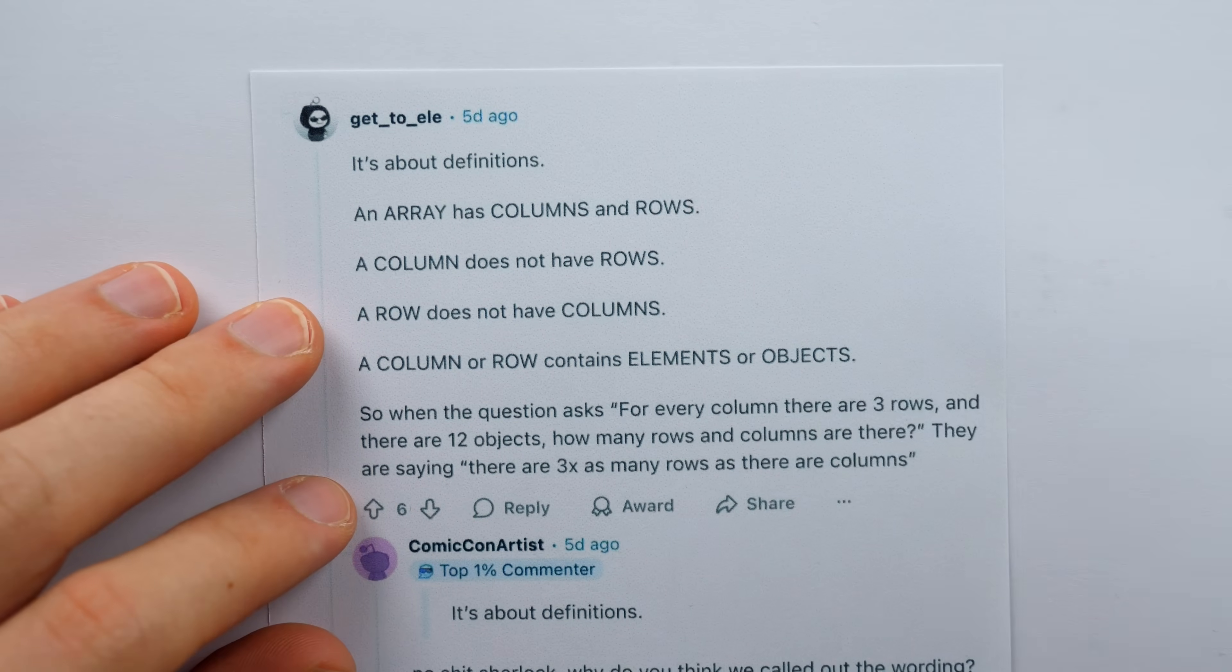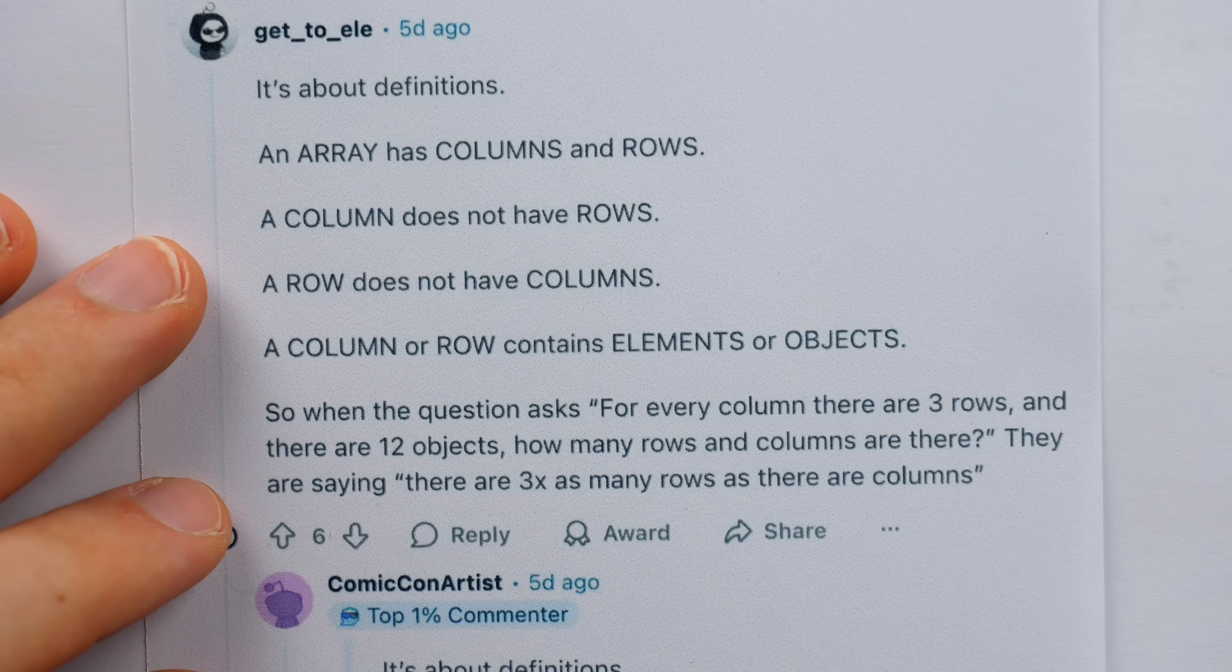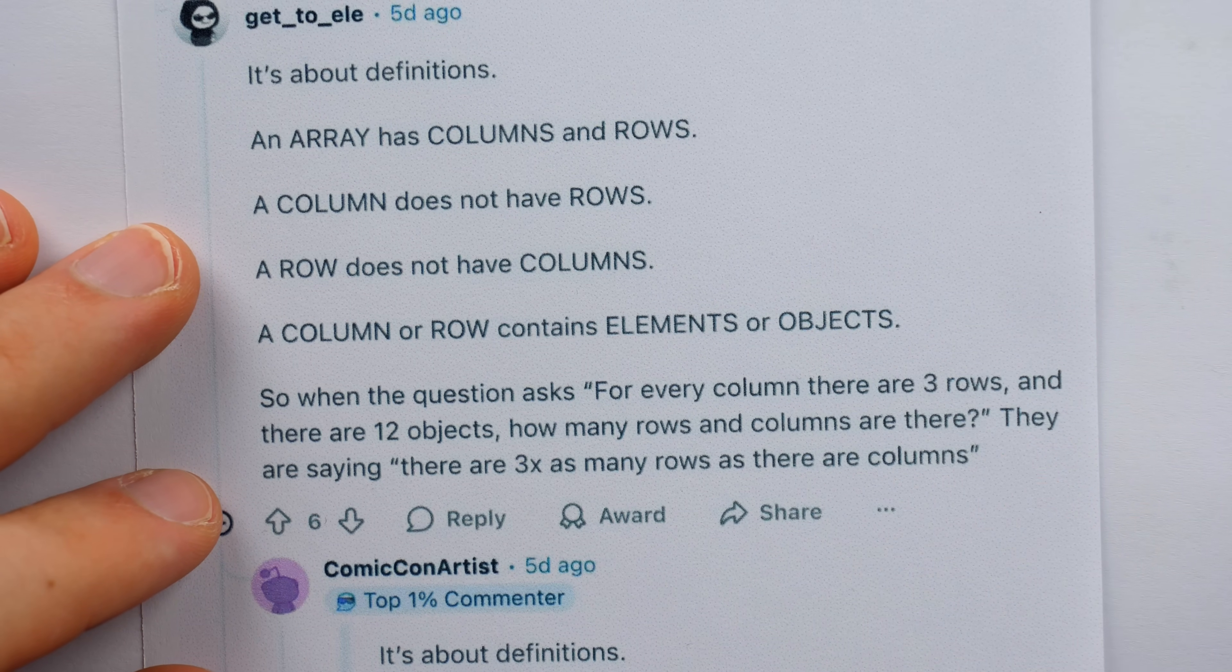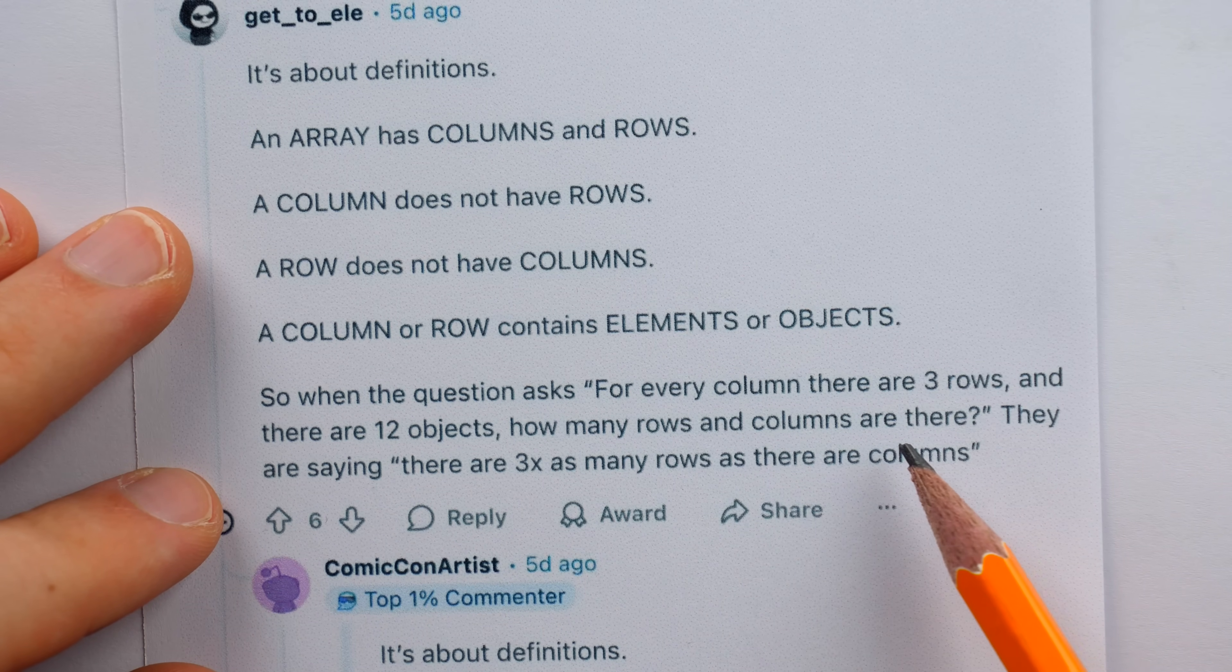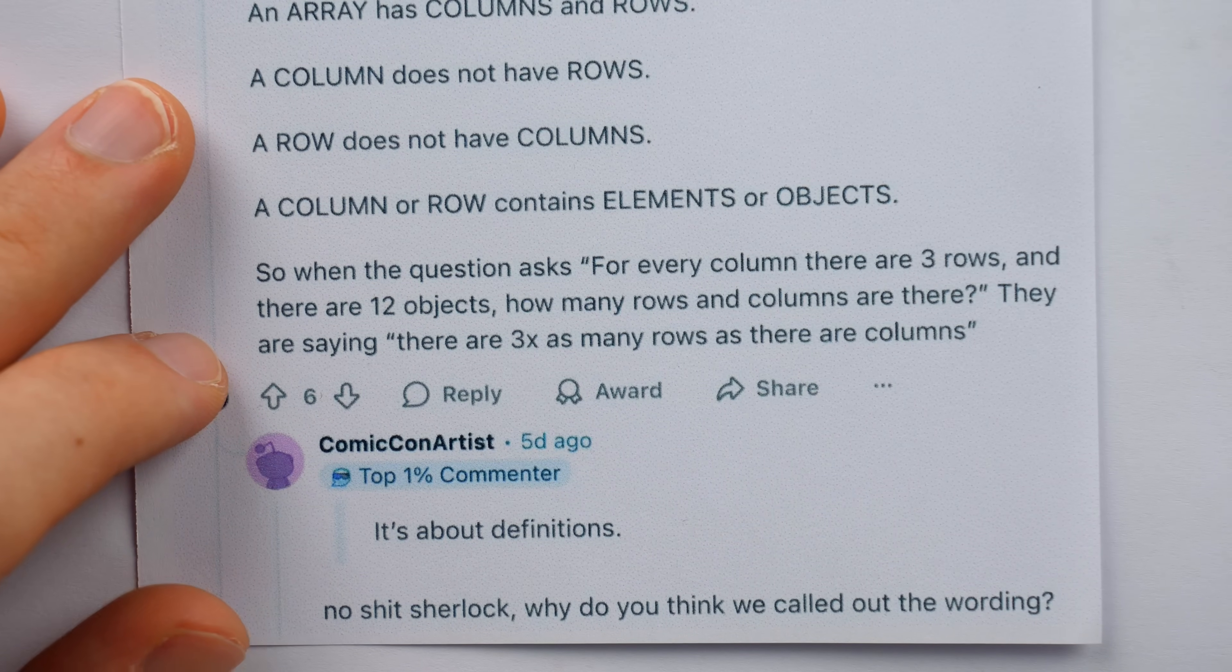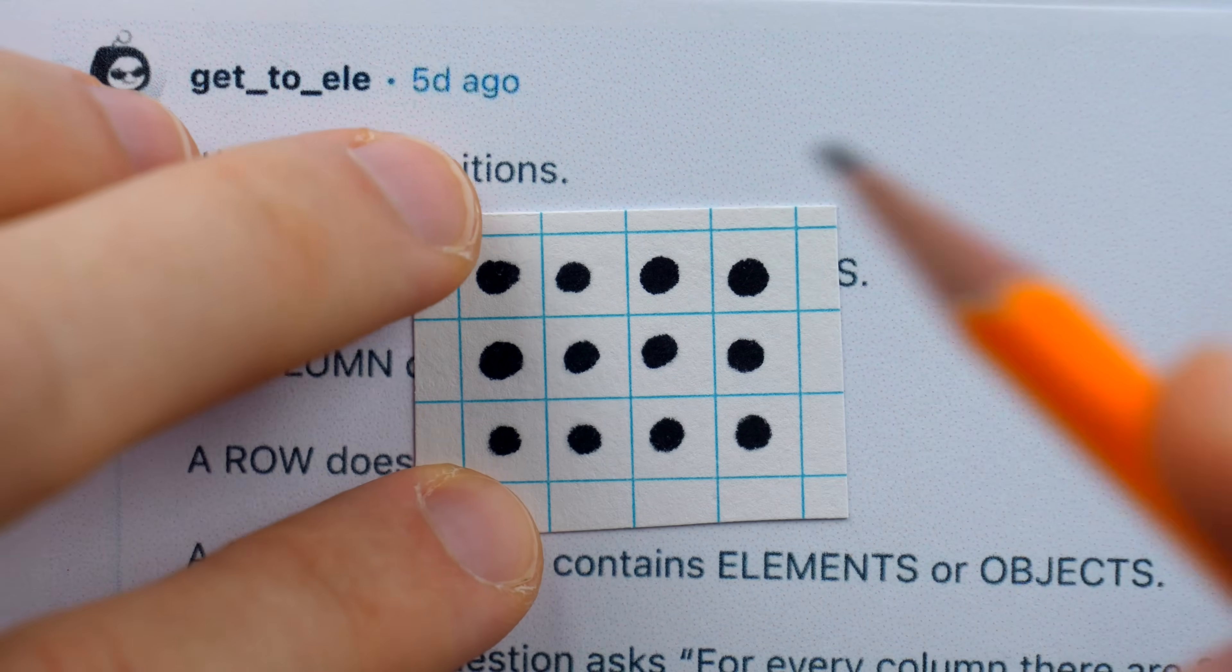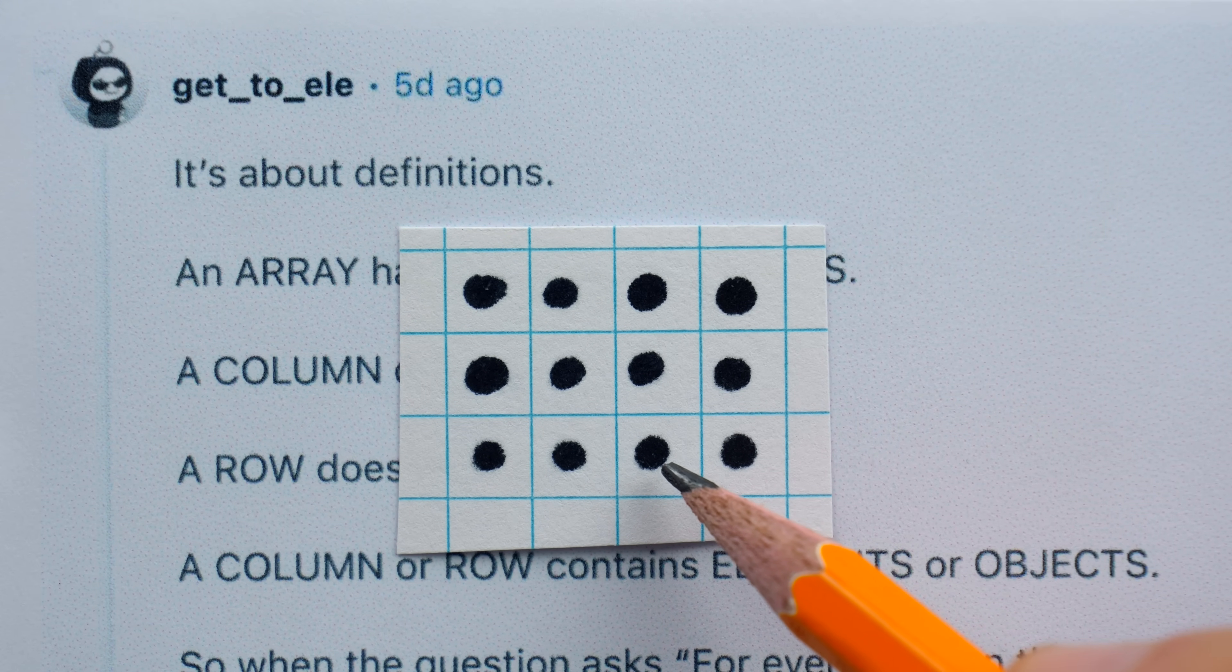And GetToElly says, it's about definitions. An array has columns and rows. A column does not have rows. A row does not have columns. A column, or row, contains elements or objects. So when the question asks, for every column there are three rows and there are 12 objects, how many rows and columns are there? They are saying there are three times as many rows as there are columns. I understand what he's saying, but personally, I think this is a pretty weak semantic argument. Here, I'm going to do an impression of GetToElly pointing at a dot on an array and having someone else ask him questions to determine which dot he's pointing at. I'm pointing at a dot in the array. Which column of the array is it? It's the third column. And which row of that column? What?